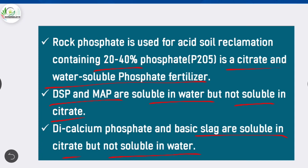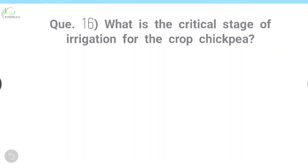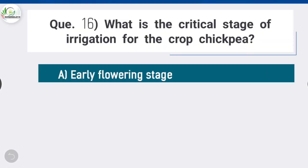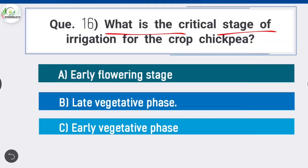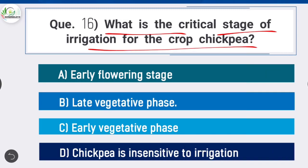Question 16: What is the critical stage of irrigation for chickpea? Option B is correct: late vegetative phase. Chickpea is a pulse crop and is only sensitive to irrigation in the late vegetative phase.